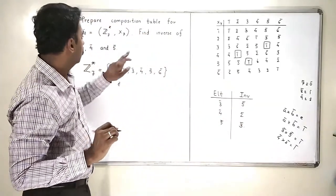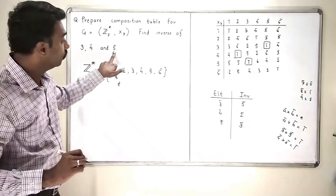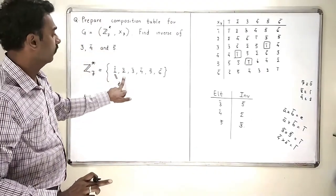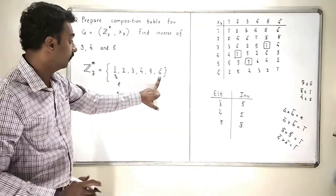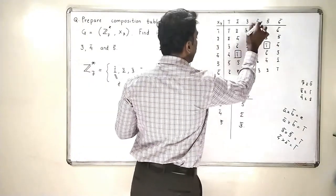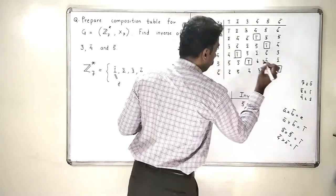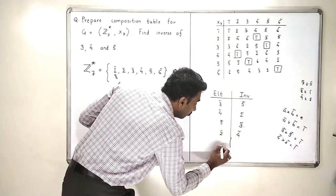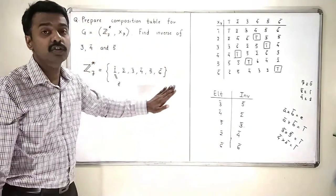So, this finishes our exercise of finding the inverses of 3, 4 and 5. You can also find the inverse of 2 bar. If you want to, you can also find the inverse of 6 bar. Inverse of 2 bar will be 4 bar. And inverse of 6 bar will be 6 bar itself. So, 2 bar inverse is 4 bar. And 6 bar inverse is 6 bar. So, this now completely finishes our exercise.